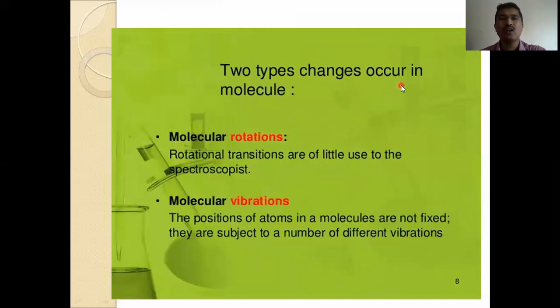Two types of changes occur in the molecules. Molecular rotations. What is meant by molecular rotations? Molecular rotations means that rotational transitions are of little use to the spectroscopist. Molecular vibrations. The position of the atoms in the molecules are not fixed. They are subject to a number of different vibrations.